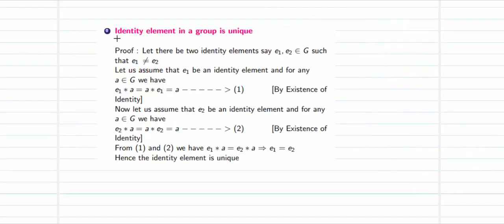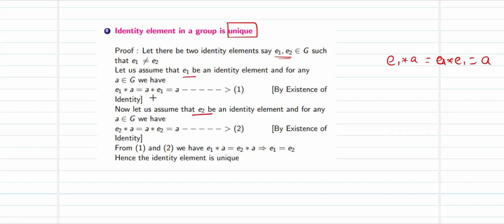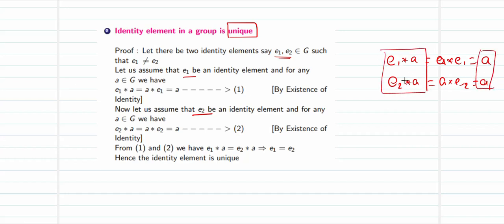The second property states that the identity element of a group is unique — there is only one element that can act as an identity. To prove this, assume there are two identity elements e₁ and e₂ where e₁ ≠ e₂. If e₁ is the identity, then for any a in G: e₁★a = a★e₁ = a. If e₂ is the identity, then e₂★a = a★e₂ = a.